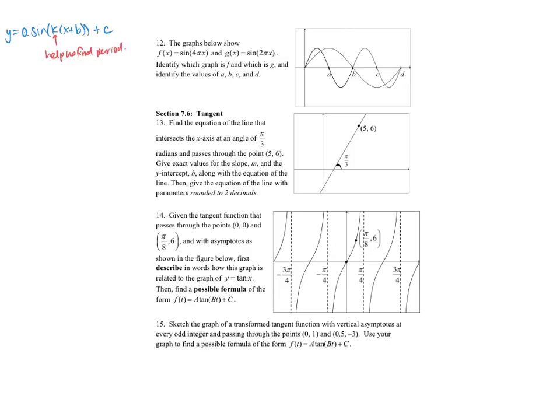So if I have sine of 4 pi x, the number in front of the x is the value of k that helps us determine the period. I look at my other function which is sine of 2 pi x, and that number in front is also going to help us determine the period. So the period of this one is 2 pi over that number, which is 2 pi over 4 pi equals one half.